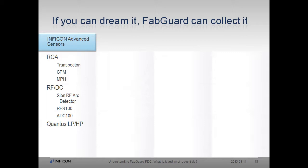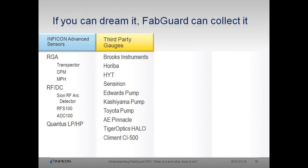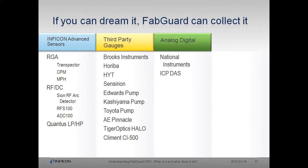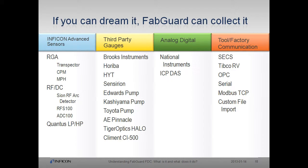What kinds of signals can FabGuard collect? Basically, if your signal has any kind of structure and travels on a wire, FabGuard can probably collect it. Here are a few examples by category — this is only a sample of the signal types available. A full list of sensors, gauges, boards, and protocols currently available in FabGuard can be found in the software help.